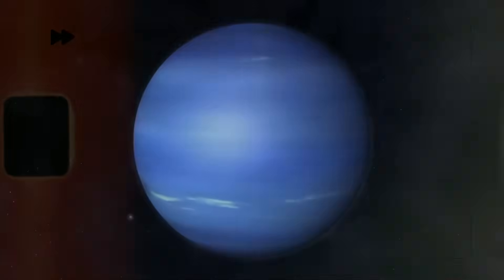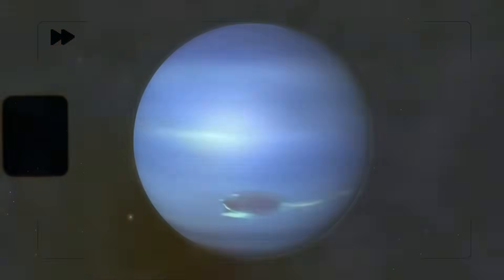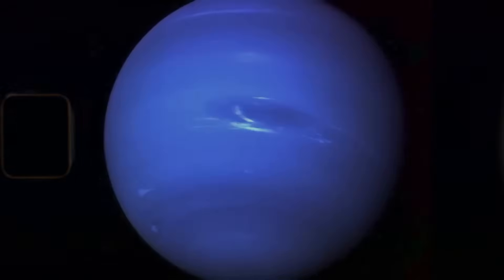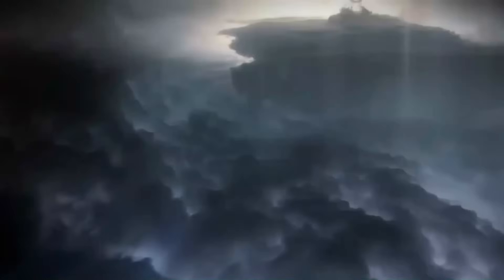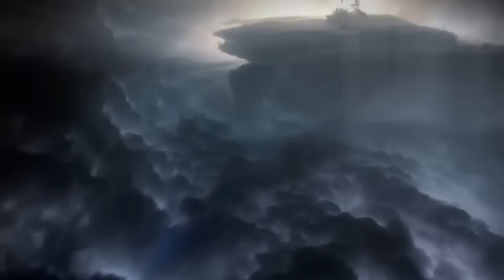Another major pillar of Tyson's findings involves the planet's atmospheric dynamics. Neptune has always been noted for its fierce winds, the fastest in the solar system, and a highly active weather system despite receiving minimal solar energy. The source of this internal energy has been a subject of debate for decades.